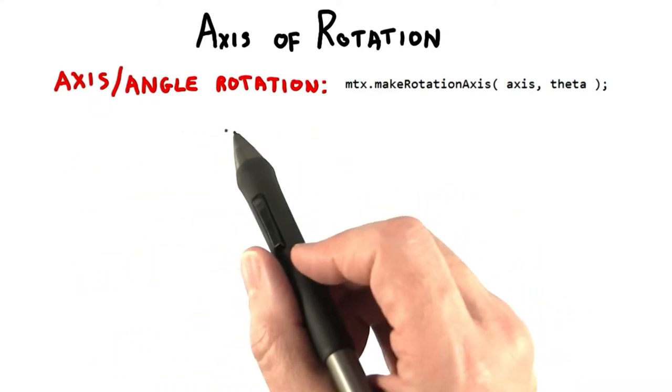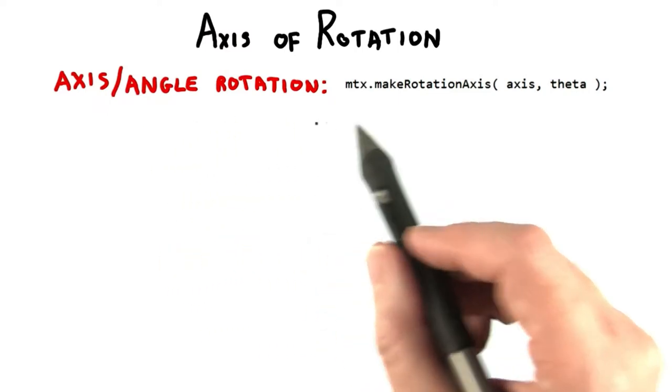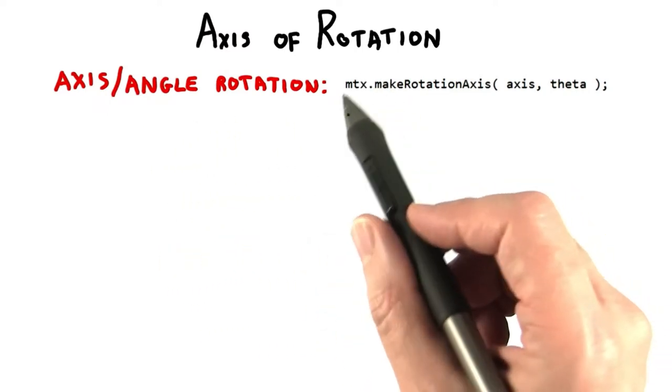Here's a transform that isn't built into the Object3D class: axis angle rotation. And for that, you really do need to use a separate matrix.